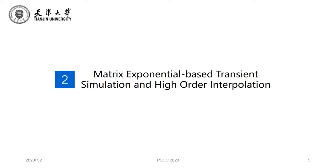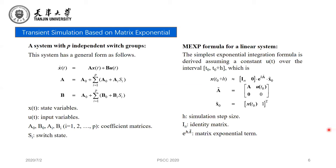In the second section, I will introduce the matrix exponential method and high-order interpolation based on dense output. Power electronic circuits always contain a large number of switches. The state space model of a system with P independent switch groups has a general form as shown here. This is a piecewise linear model and the state matrix A is dependent on the switch values SI, which represents the state of the I-th independent switch group as a binary value.